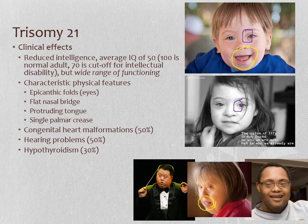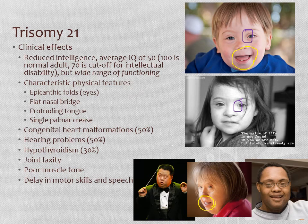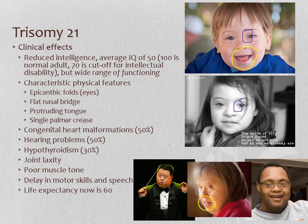People with Down syndrome have a high likelihood of significant medical problems. About half will have congenital heart malformations, often severe enough to require surgery in infancy. Hearing problems are common, as is an underactive thyroid. They also tend to have very lax joints, low muscle tone, and as a result it takes them longer to develop the strength to walk and to reach motor and speech milestones.